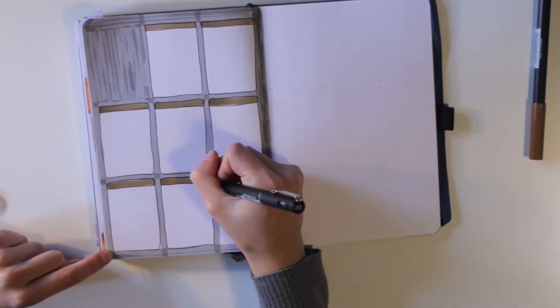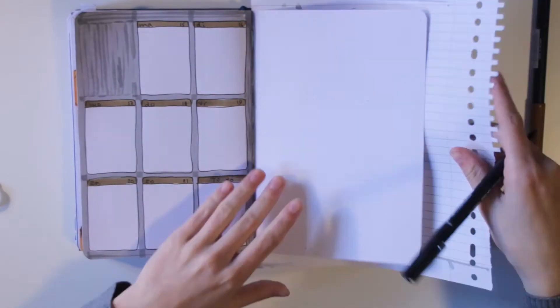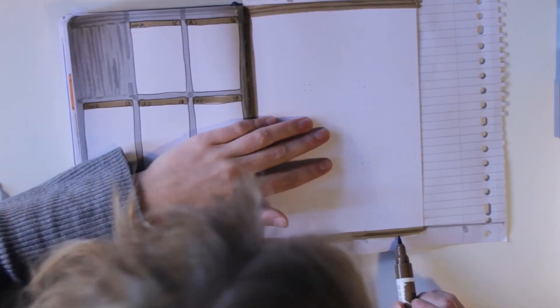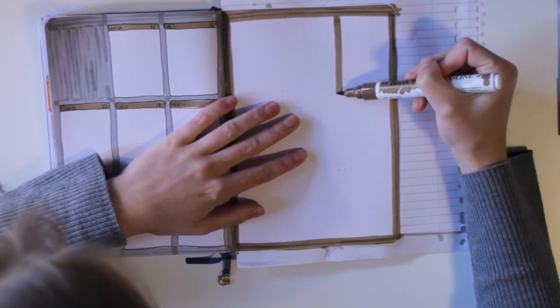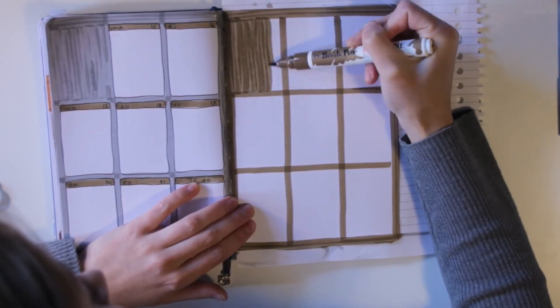So the measurements for these boxes are if you count them in dots it's nine by thirteen dots or eight by twelve spaces. And that way it fits perfectly I think. And then this was one grid space in between each box.